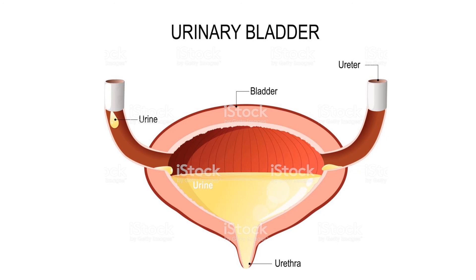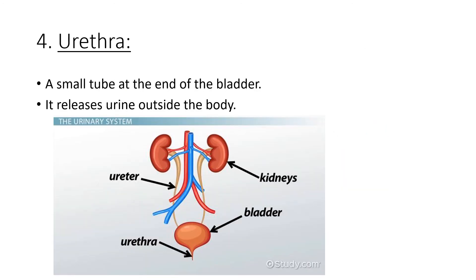When the urinary bladder is almost full, at the bottom of the bladder you have a tiny tube called the urethra. The urethra is the final part of your urinary system — it's a small tube at the end of your bladder. When your bladder is almost full, your bladder will contract and urine will be released outside of your body through the urethra.